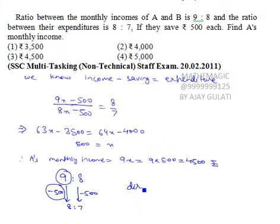Direct answer: 9 into 500, 4500, Option 3. Directly 9 into 500, 4500.